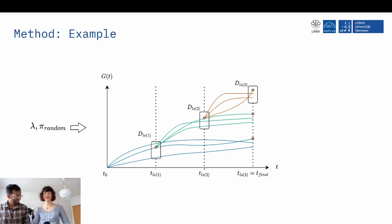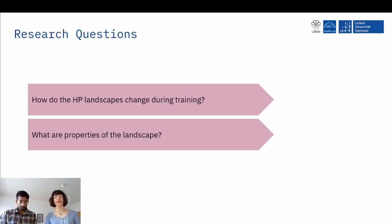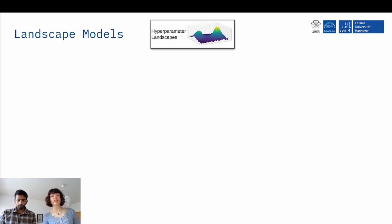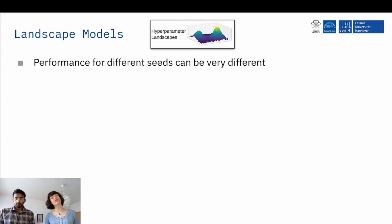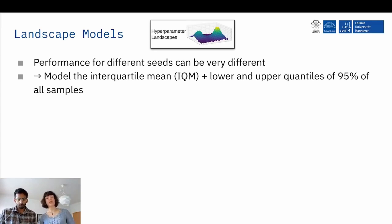Now, what do we do with this data? So we were wondering, do the hyperparameter landscapes change during training and how do they do it? And what are properties of the landscape? So for this, we first look into how we can model those landscapes. So because we saw that the performance for different seeds can be very different, we don't model it just with one model. We use three models, one modeling the interquartile mean, and the two others modeling the lower and upper quantiles of 95% of all samples to get a better grasp of the actual distribution or the actual data.